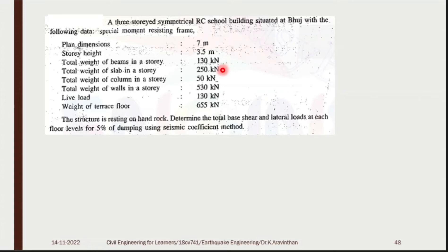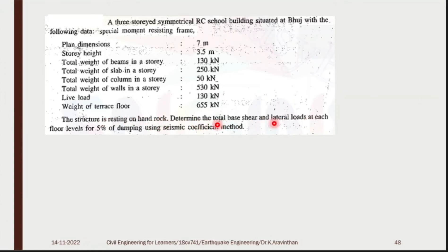The beam self-weight is less and the slab self-weight is more. Column weight per storey = 50 kN — columns have less self-weight than beams since there are more beams than columns. Total wall weight per storey = 530 kN, which is more than the slab weight due to the many partition walls. Terrace floor weight = 655 kN. The structure rests on hard rock. Determine total base shear and lateral load at each floor level for 5% damping using the seismic coefficient method.